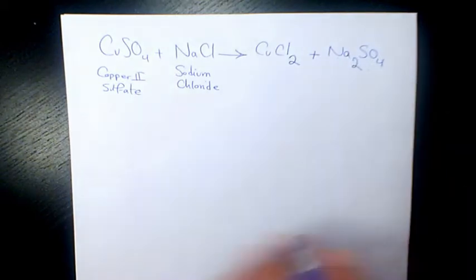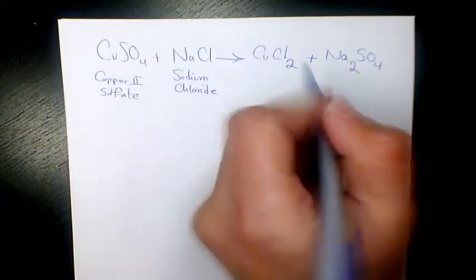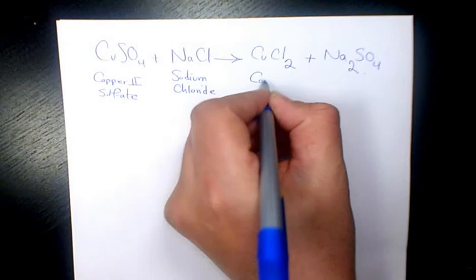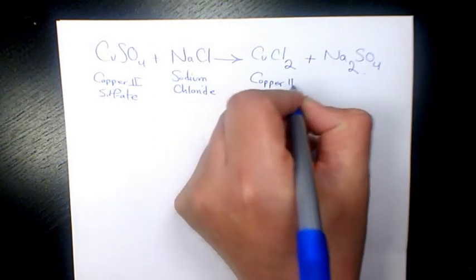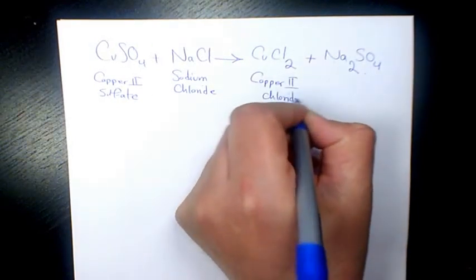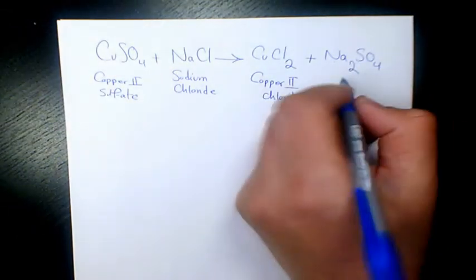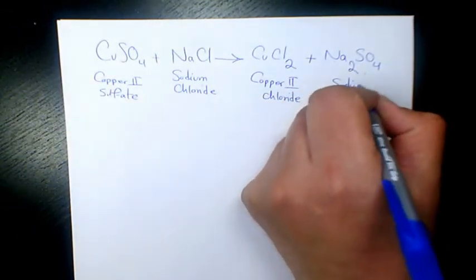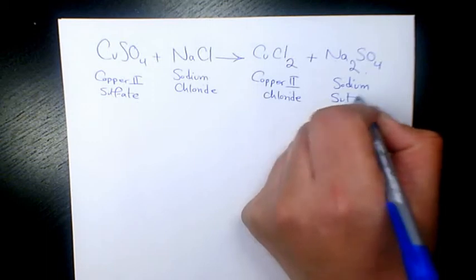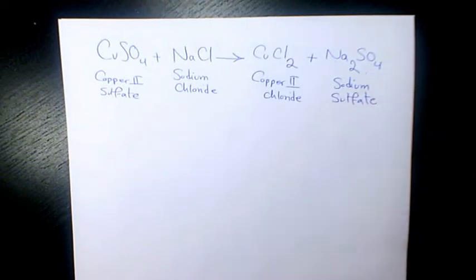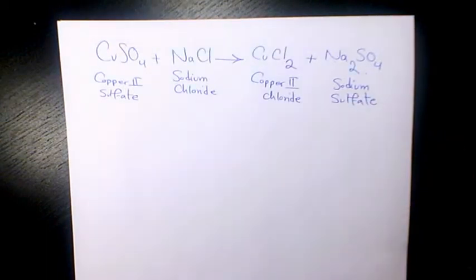CuCl2 is copper(II) chloride, and Na2SO4 is sodium sulfate. Now let's balance this reaction. We have sodium - two atoms on the product side and one atom on the reactant side.